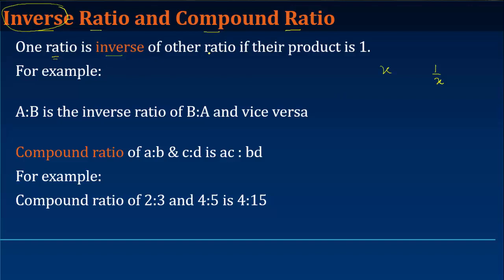One ratio is the inverse of the other ratio if their product is 1. So let's say, for example, you have A is to B, which is a given ratio.